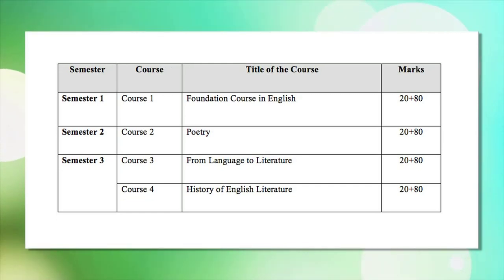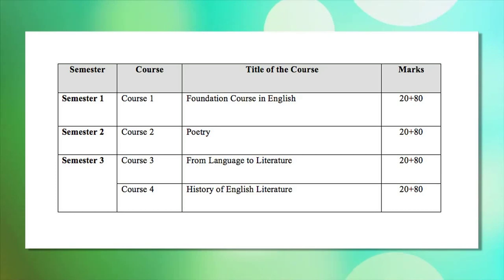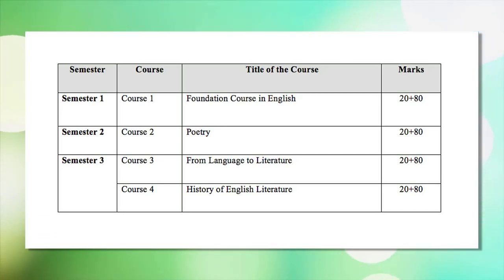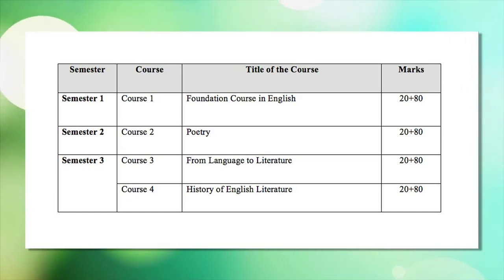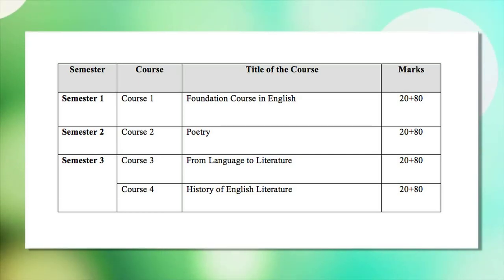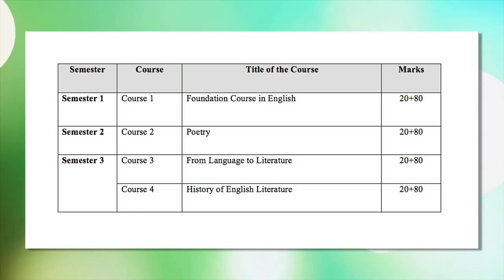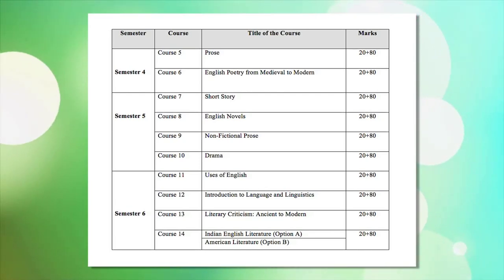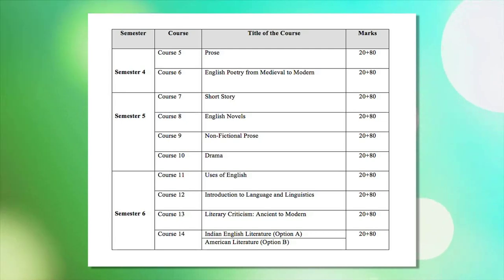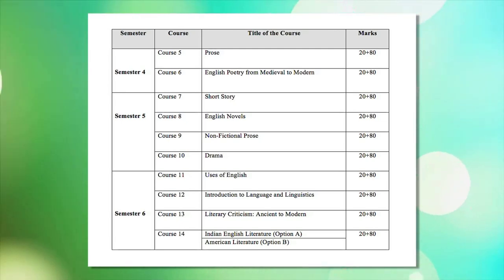The courses are as follows. In the first semester, we shall study the paper titled Foundation Course in English, which is common for both BA major and pass course learners. In semester two, we shall deal with the Poetry paper. In semester three, the papers are From Language to Literature and History of English Literature. In semester four, we shall deal with two papers titled Prose and English Poetry from Medieval to Modern.